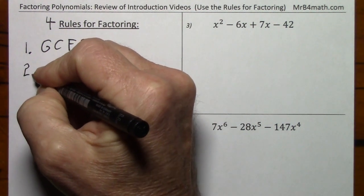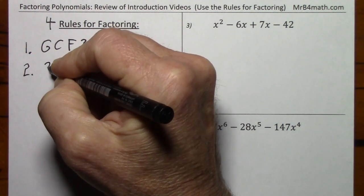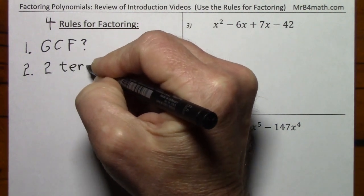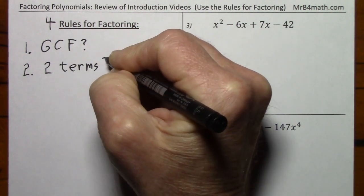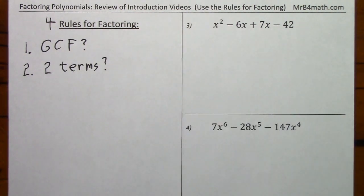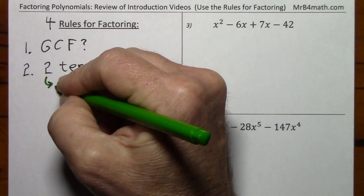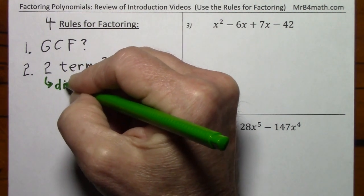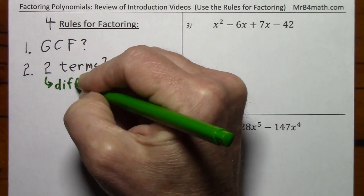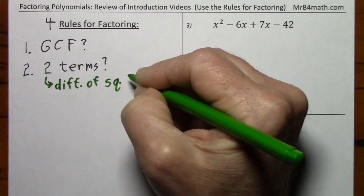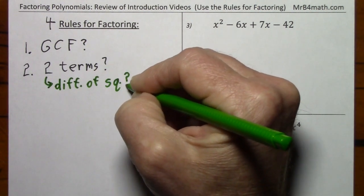Number two: do you have two terms? If you have two terms, you ask another question — do you have a difference of squares? If you do, then you can factor it.